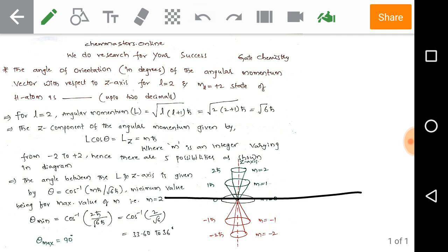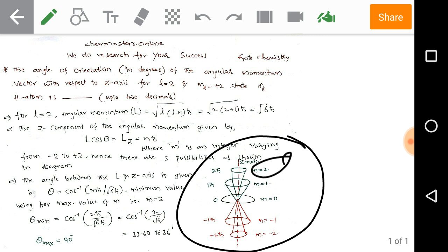For theta minimum, the angle of orientation of angular momentum vector to the Z-axis is minimum. That's cos inverse of square root of 2 h-bar divided by square root of 6 h-bar. For M values, the minimum angle is observed in the diagram at M equals 2. We need to take M equals 2 in the formula and substitute it.